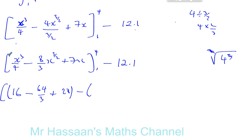minus, and now you've got to put 1 into there. So you have 1 quarter minus 8 over 3. Whatever you do to 1, square it, cube it, find the square root of it. It'll always be 1. Minus 8 over 3 plus 7. That's the area under the curve, and then you've got to take away the area of the triangle, which is 12.1.